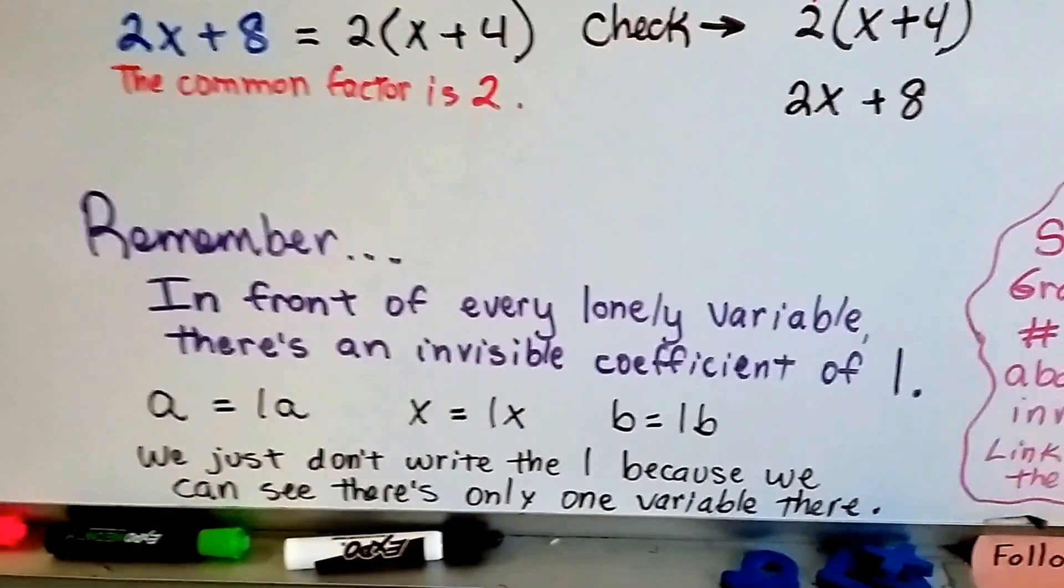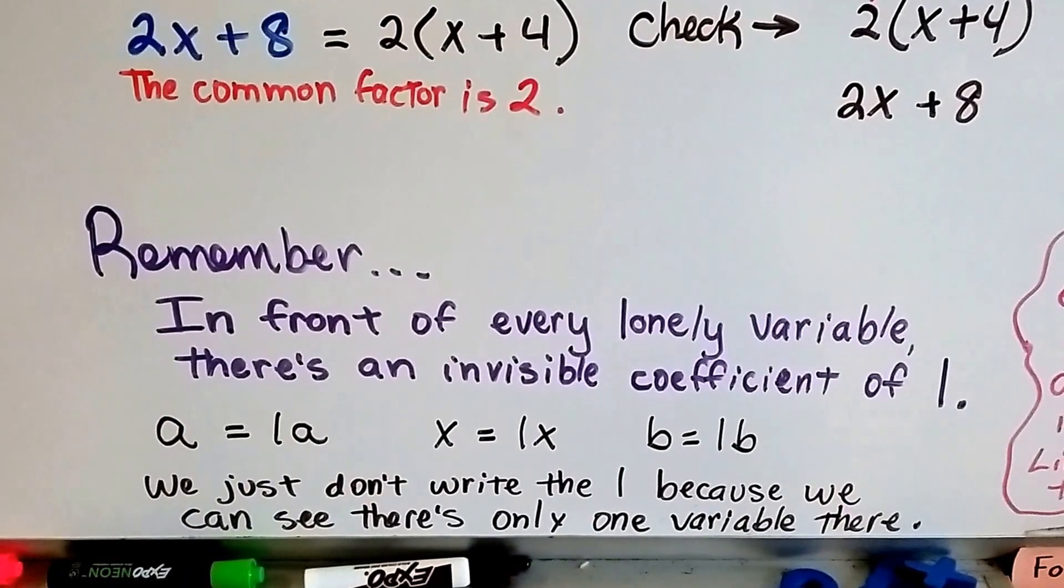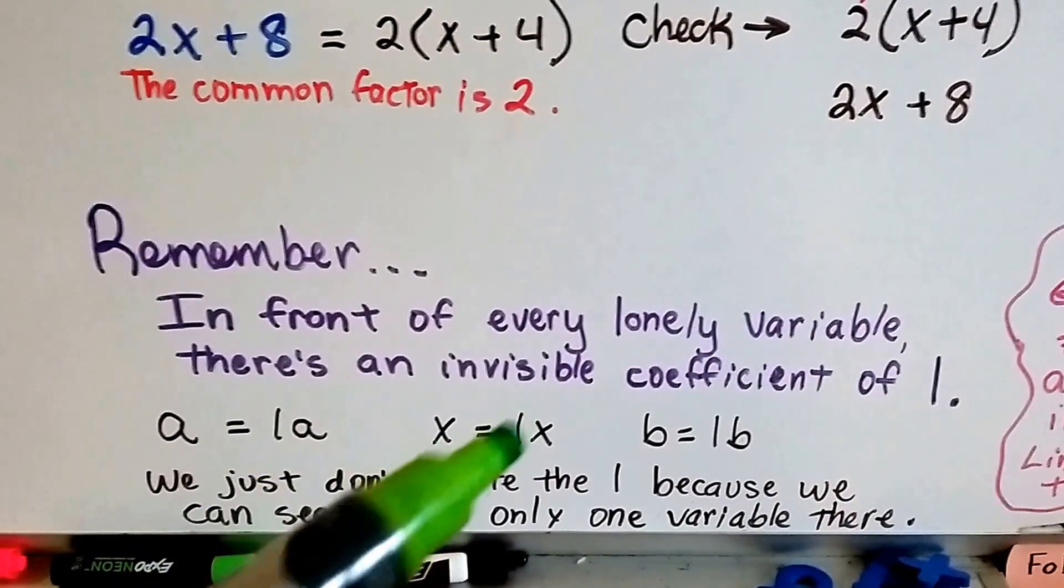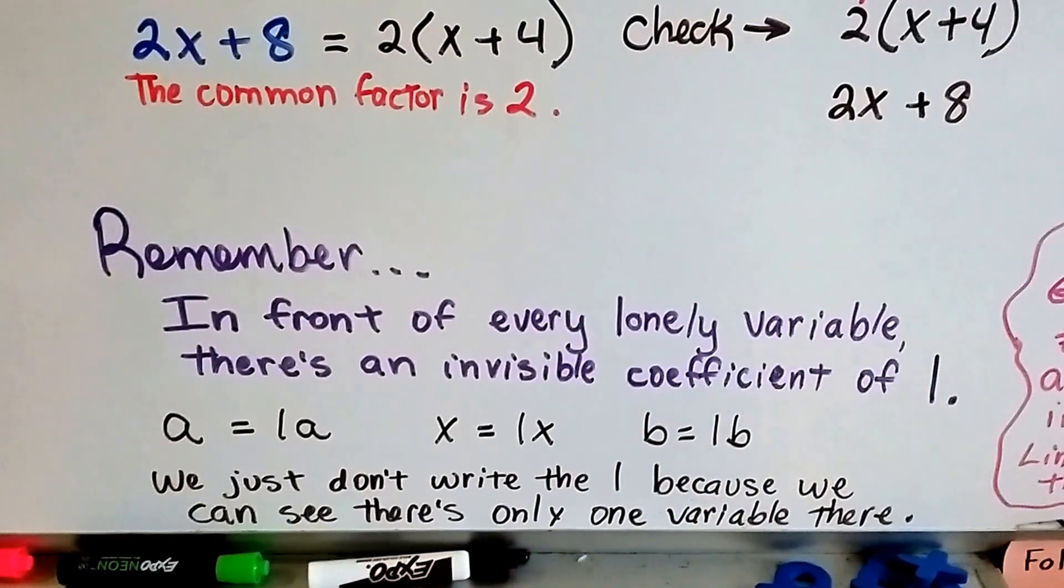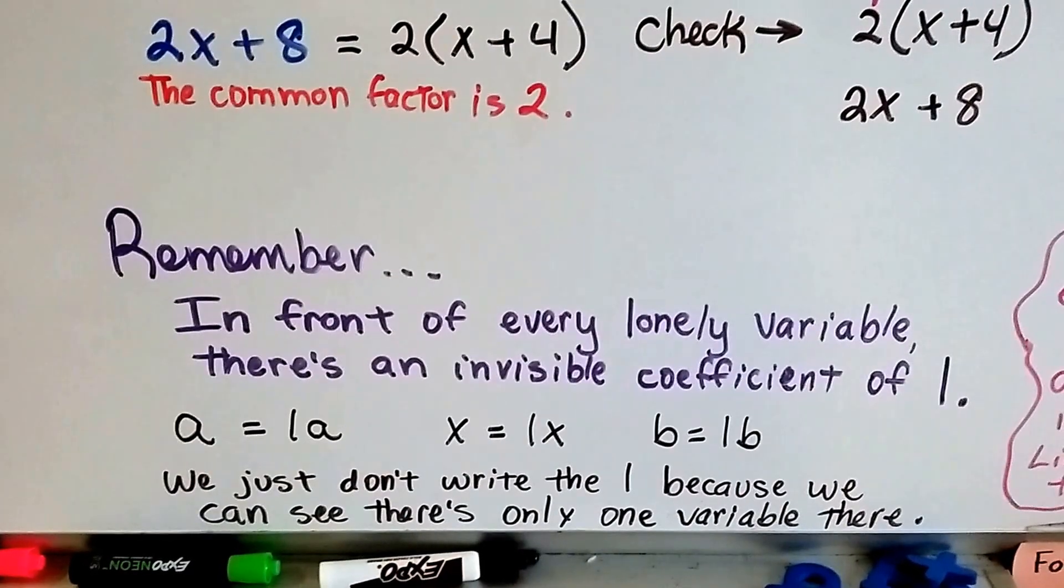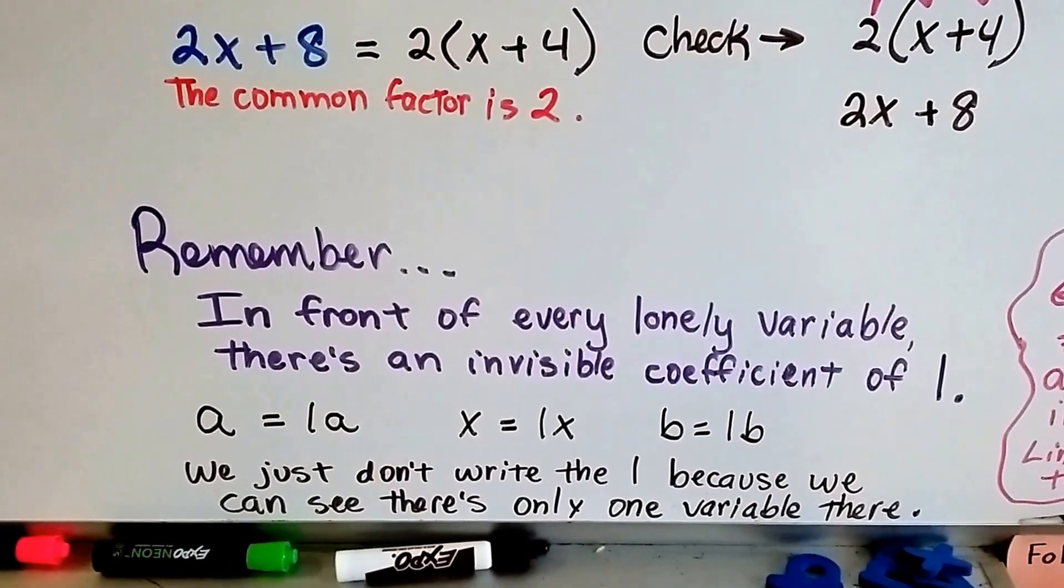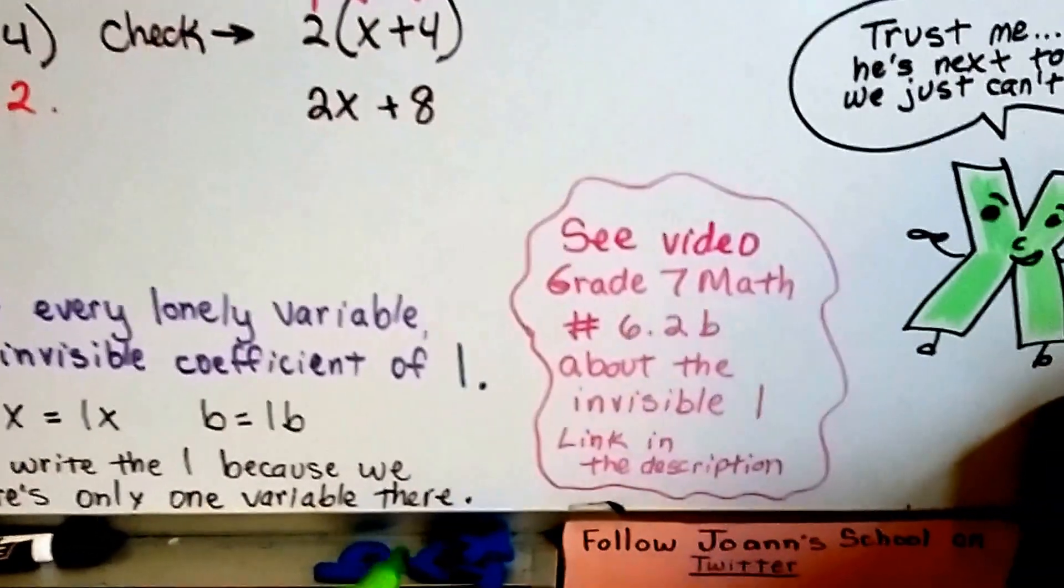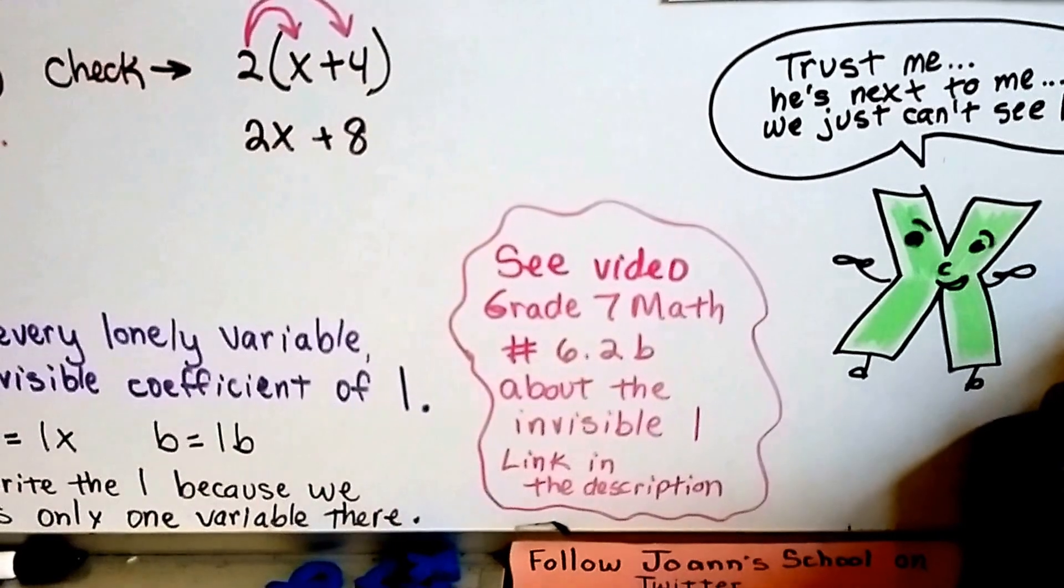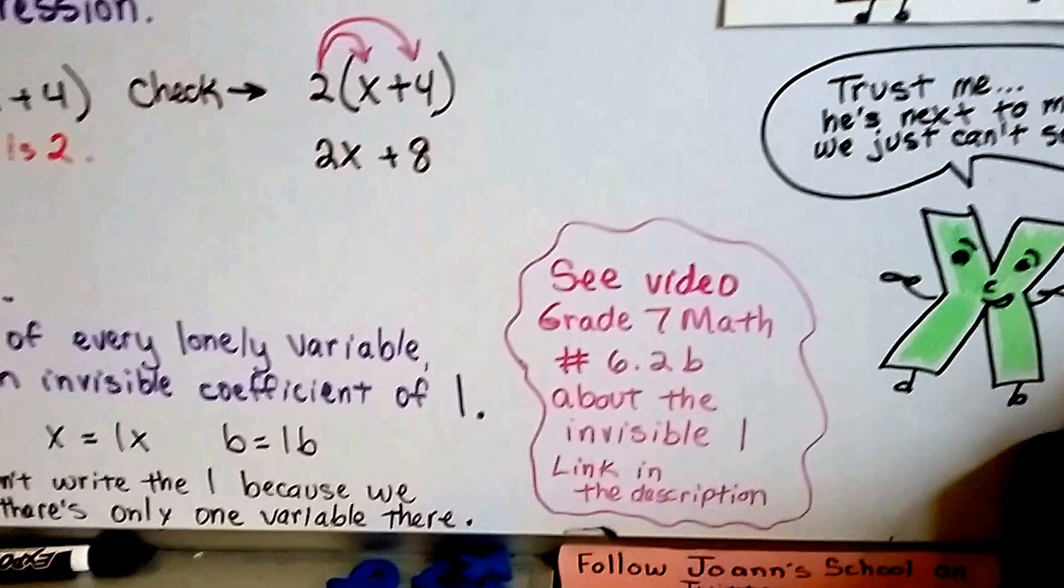So remember, in front of every lonely variable, there's an invisible coefficient of 1. He's not really lonely. He's got his buddy the 1 there. He's just invisible. If you just see a, it really means 1a. If you see an x, it really means 1x. If you see a b, it means 1b. If you see an m, it means 1m. In front of every lonely variable, there's actually an invisible 1. We just don't write the 1 because we can see there's only one variable there. So the link for the invisible 1 is in the description of this video. And like I said, if you haven't seen it, you really should so you'll understand because we're going to use this invisible 1 a lot in algebra.